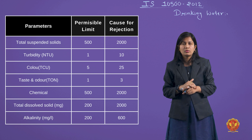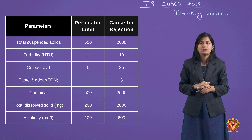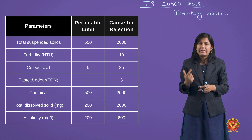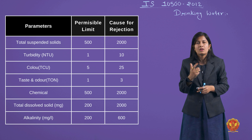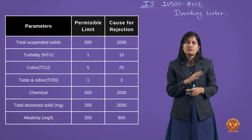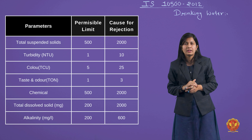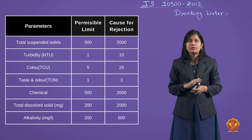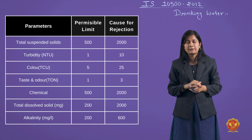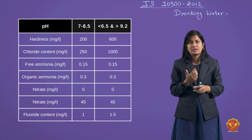Chemical parameters की बात करें। Total dissolved solids (TDS) की permissible limit 500 mg/L, cause for rejection 2000 mg/L। Alkalinity को milligram per liter में measure करते हैं — permissible limit 200 mg/L, cause for rejection 600 mg/L। अगर alkalinity 600 mg/L से ऊपर हो जाए, तो उस water को treat भी नहीं करते, reject कर देंगे।